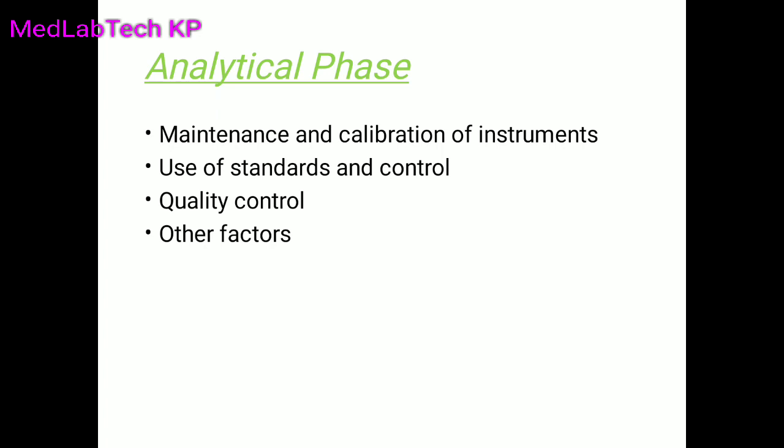Next is the analytical phase. Analytical factors include the actual test procedure, maintenance and calibration of instruments, use of standards and controls during testing to validate reagents or kits, and quality controls to ensure proper test methods. Additional factors affecting this phase include pipetting, dilution, timing, stability of reagents, and other technical variables. Errors in the analytical phase are the least common.